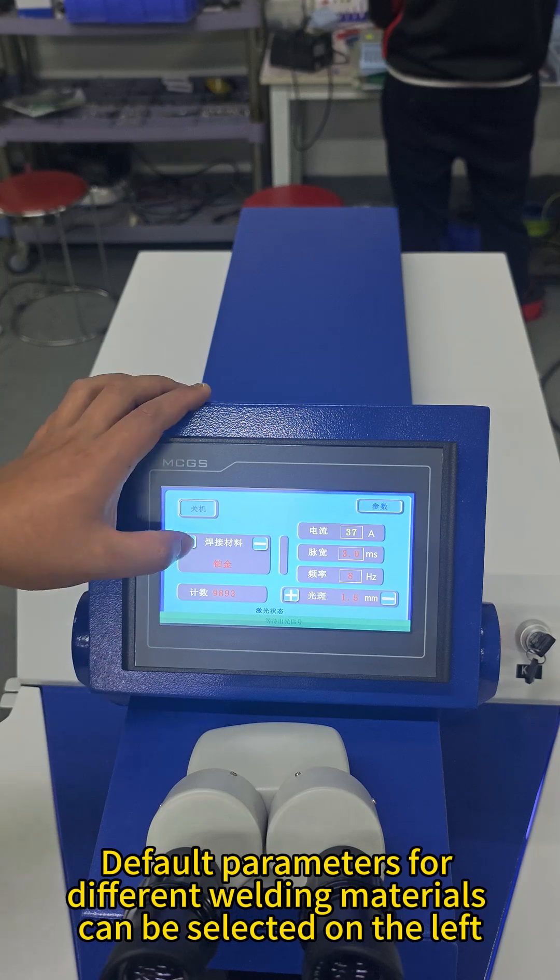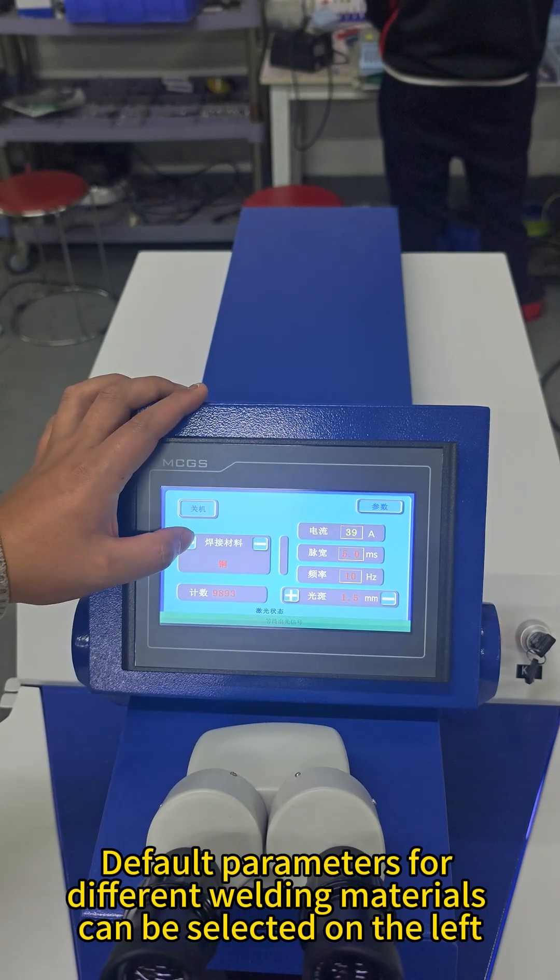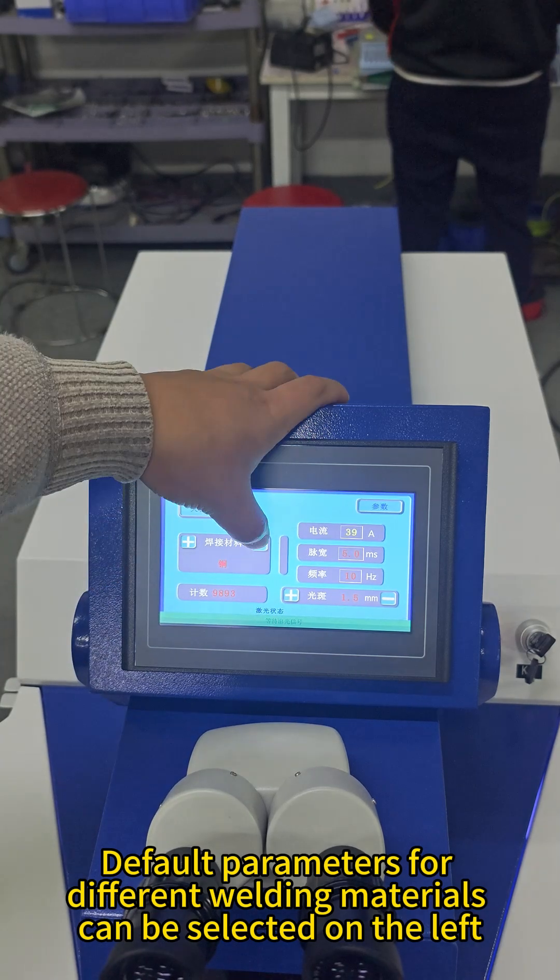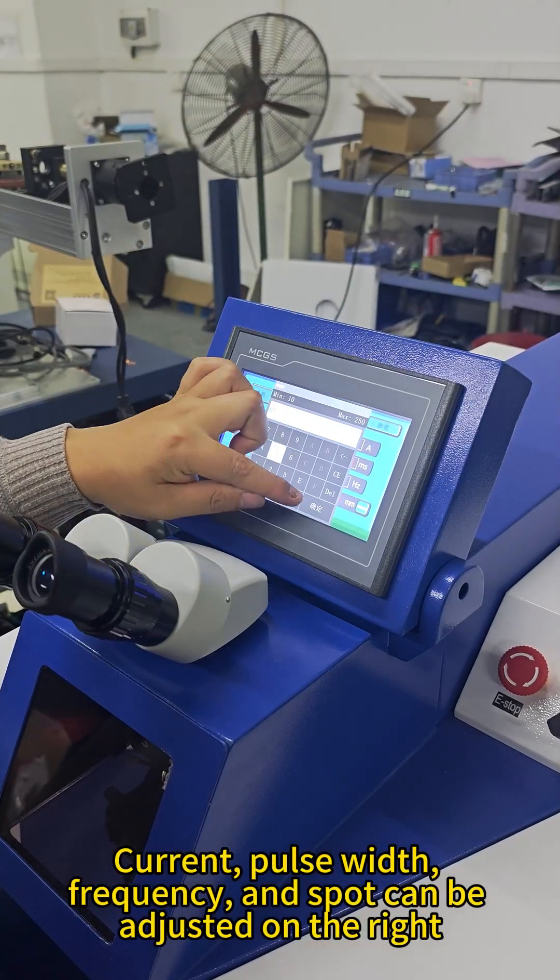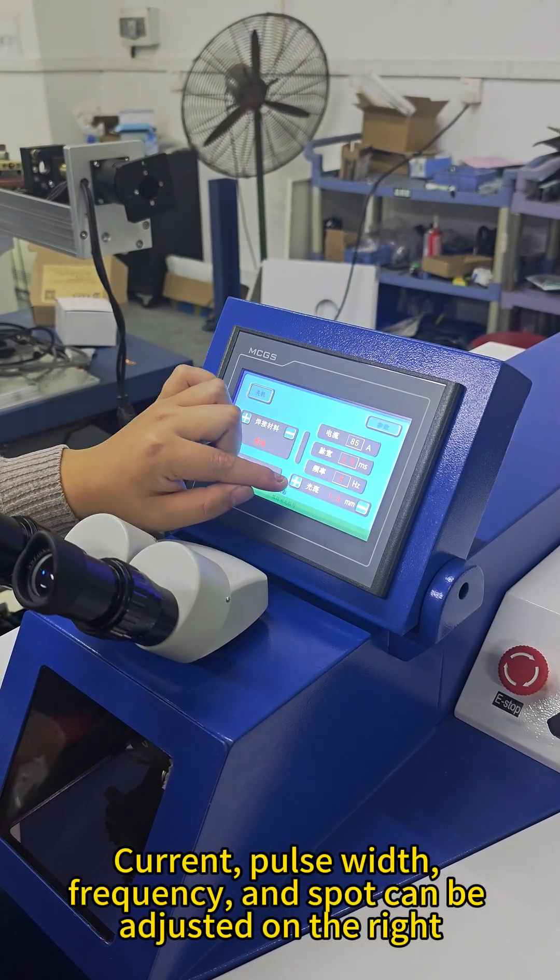Default parameters for different welding materials can be selected on the left. Current, pulse width, frequency and spot can be adjusted on the right.